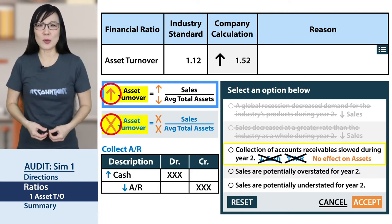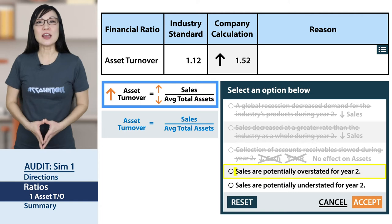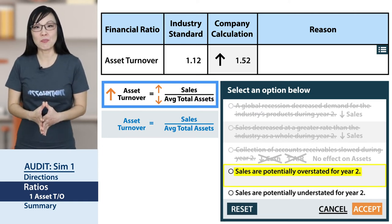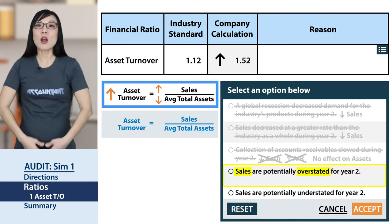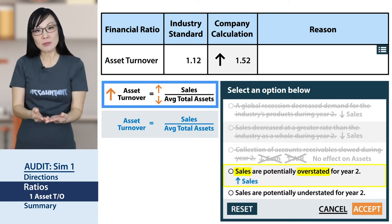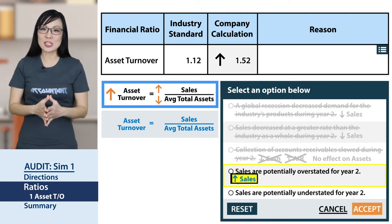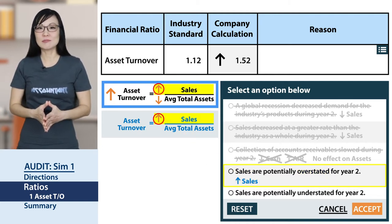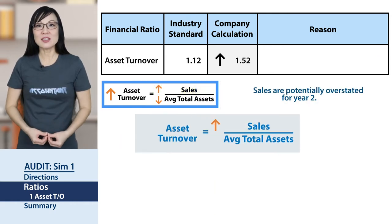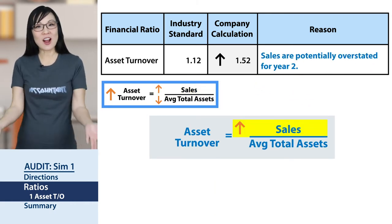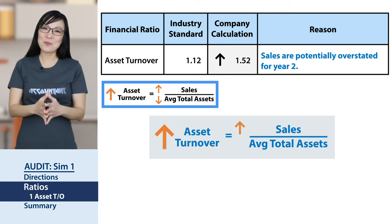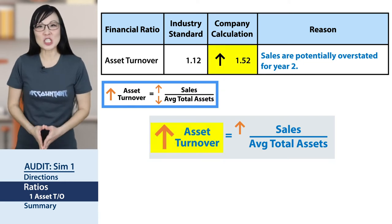Choice D: sales are potentially overstated for year two. If sales are overstated, then sales are higher. Plugging that into our ratio — that's a match, because when sales are higher, asset turnover is higher. First one down.